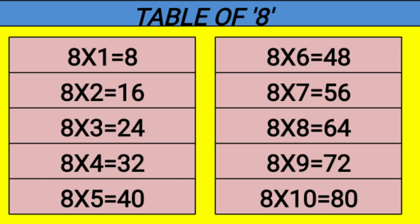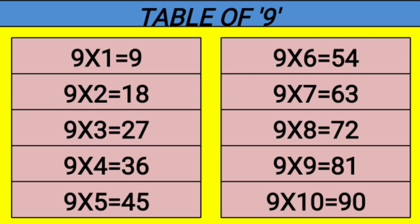Table of 8. 8 1s are 8, 8 2s are 16, 8 3s are 24, 8 4s are 32, 8 5s are 40, 8 6s are 48, 8 7s are 56, 8 8s are 64, 8 9s are 72, 8 10s are 80.